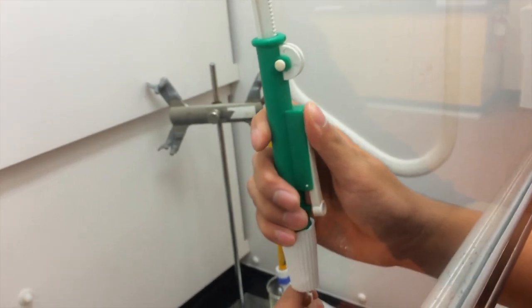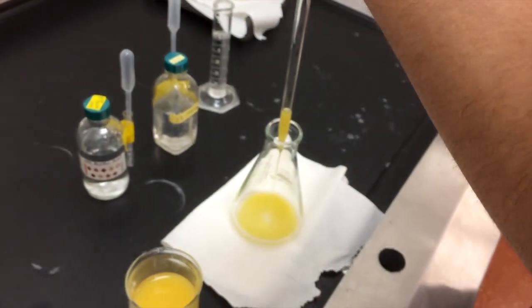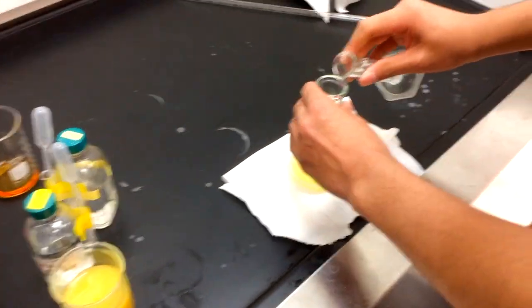Using a pipette and a pipette pump, transfer 10 milliliters of your first sample into an Erlenmeyer flask, followed by 25 milliliters of deionized water.